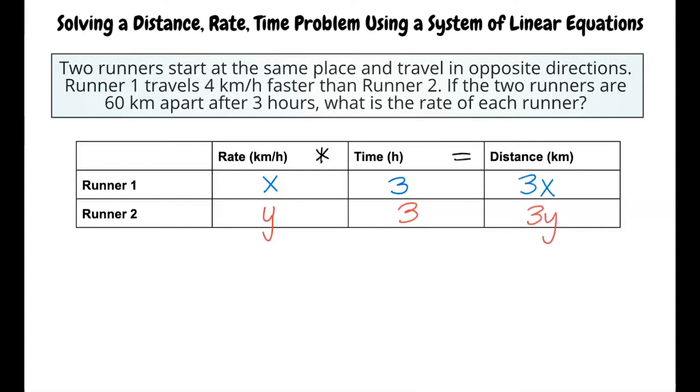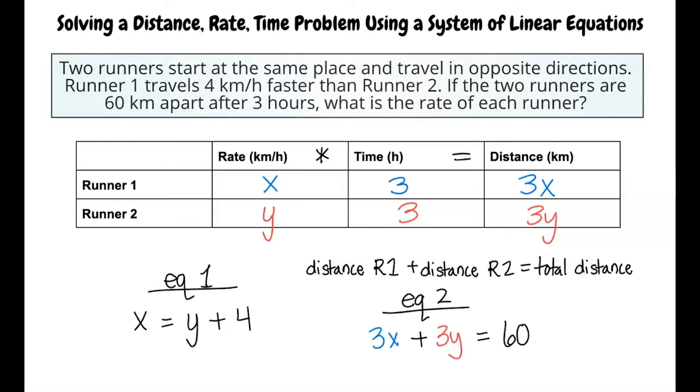Runner 1 travels 4 km faster than runner 2. So, the first equation is x equals y plus 4. Since the runners are 60 km apart after running 3 hours, we can write our second equation, 3x plus 3y equals 60.